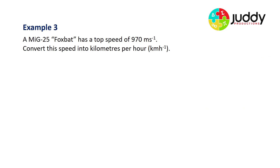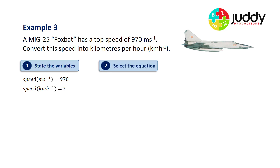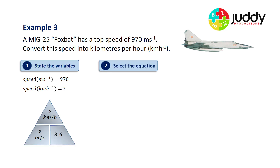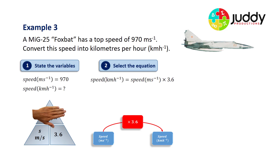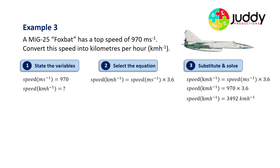Example three: a MiG-25 Foxbat has a top speed of 970 metres per second — incredibly fast. We want to convert this into kilometres per hour. State the variables: speed in m/s is 970. Select the equation: speed in km/h equals speed in m/s multiplied by 3.6. Substituting and solving: 970 multiplied by 3.6 gives a speed of 3,492 kilometres per hour.